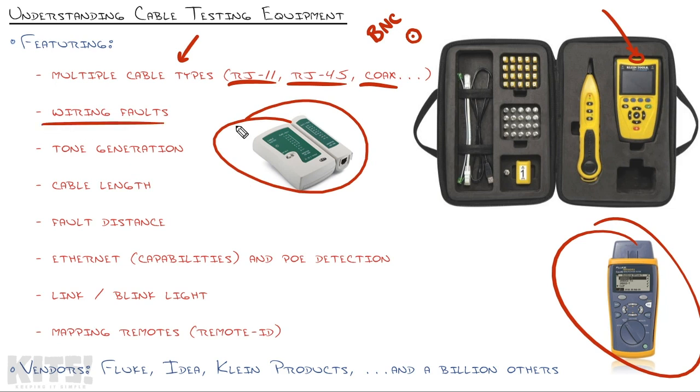Now the core function of just about every cable tester in existence is to find wiring faults. For example, it's hard to see on this, but you can see that there's actually eight individual LEDs on this box.